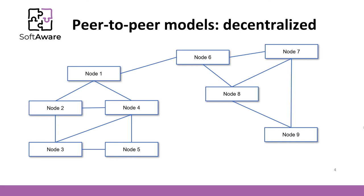Because the role of all peers in the network is the same, unstructured networks are highly robust. However, the primary limitations of unstructured networks also arise from this lack of structure. In particular, when a peer wants to find the desired piece of data in the network, the search query must be flooded through the network to find as many peers as possible that share the data.